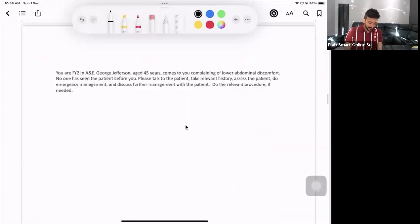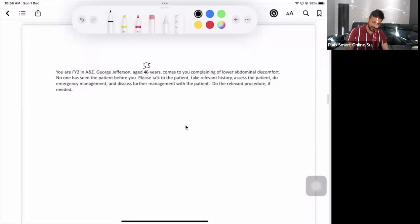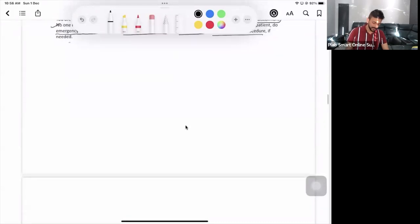Alright, so let's have a look at the scenario. The scenario is a patient is George Jefferson, his age is 55. He came to you because of his complaining of pain in the lower abdomen, lower abdominal discomfort. No one has seen the patient. You are his first hope. Please talk to the patient, take relevant history and assess the patient. Do emergency management and discuss the management with the patient. Do the relevant procedure if needed.